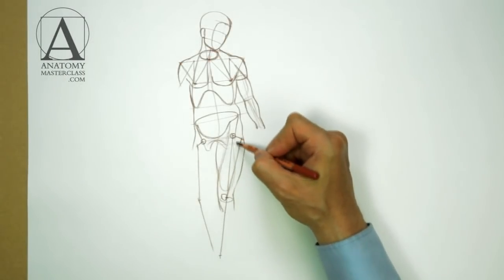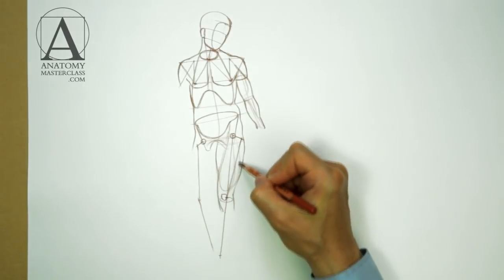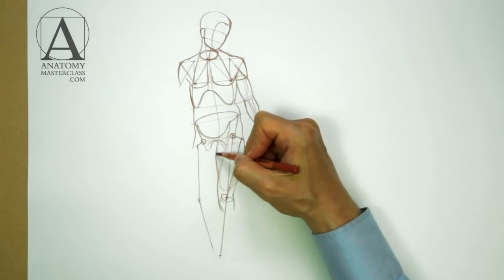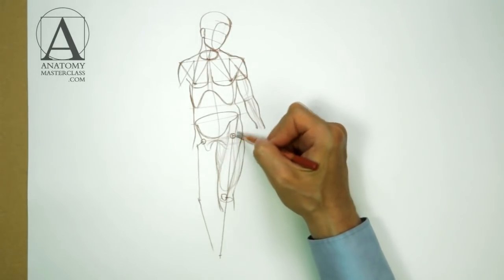The quadriceps muscle group defines the frontal shape of the upper leg. The adductor group of muscles gives volume to the inner upper portion of the thigh.